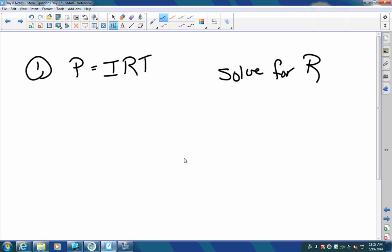Alright, so it says solve for R. R is right here. It is attached to I and T. It's all multiplying. What's the opposite of multiplying? Dividing.